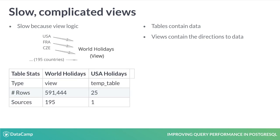As shown here, the world holidays data is actually a view that is loaded by pooling data from 195 underlying country tables. Referencing it is slow because each reference requires a SQL callback to each of the 195 country tables. Creating the USA temp table materializes the USA data into a table stored in memory for the duration of the database session, so queries referencing this USA table will subsequently run faster.